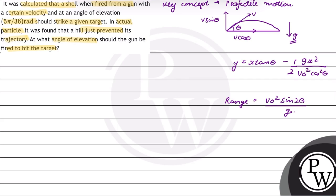In this case, theta is the angle with the horizontal. A shell is fired from a gun with a certain velocity at an angle of elevation 5π by 36 radian. So theta equals 5π by 36 radian.